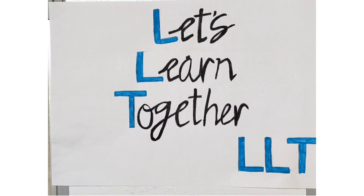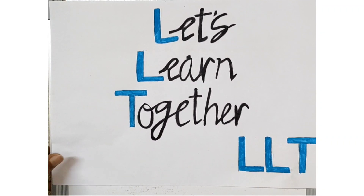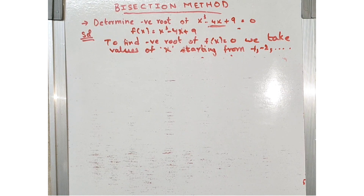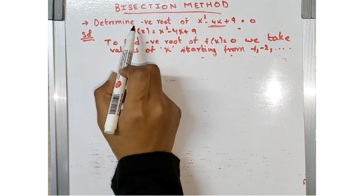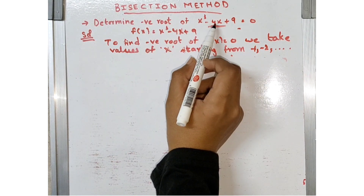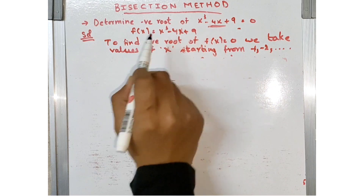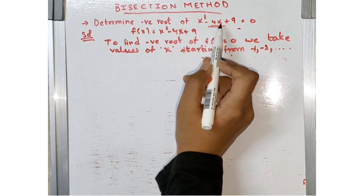Hello all, welcome to our channel. In this video I'll be explaining an example of the bisection method. In our previous video I explained the bisection method in detail — I'll provide that link in the description. Now, our example is: determine the negative root of x³ - 4x + 9 = 0 using the bisection method. So f(x) is this equation.